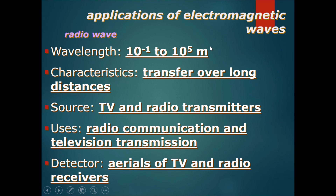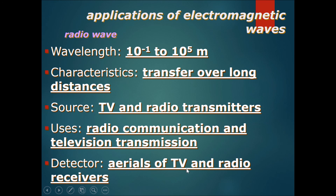Therefore, radio waves have the lowest frequencies and the lowest energies. However, even though they have such low frequency and low energy, their wavelengths are so long that they are used to transfer things over much much longer distances. That's why they are used in TV and radio transmitters, for radio communication, television transmission, with detectors being TV and radio receivers.